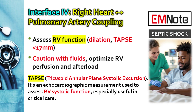Interface four is right heart versus pulmonary artery coupling — assessing for right ventricular failure. The RV is often the forgotten ventricle in sepsis, but it's critical. We look for RV dilation on ultrasound: is the RV bigger than the LV? We assess function with TAPSE — tricuspid annular plane systolic excursion. A TAPSE less than 17 mm suggests the RV is struggling. The RV hates volume overload and high pulmonary pressures. If you see RV failure, be extremely cautious with fluids and maintain the MAP mainly with norepinephrine, because the RV needs good coronary perfusion pressure.